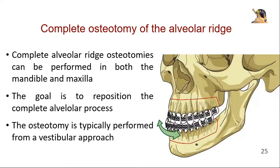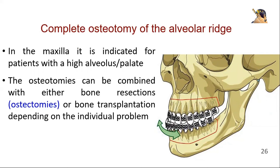Complete alveolar ridge osteotomies can be performed in both the mandible and maxilla. The goal is to reposition the complete alveolar process. The osteotomy is typically performed from a vestibular approach. In the maxilla, it is indicated for patients with a high alveolus or palate. The osteotomies can be combined with either bone resections (ostectomies) or bone transplantation, depending on the individual problem.